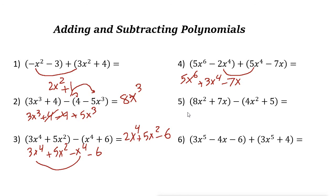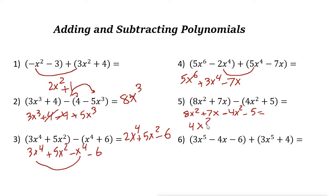For the next example, write the first polynomial: 8x squared plus 7x. Then distribute the negative: negative times 4x squared is negative 4x squared, and negative times 5 is negative 5. Combining like terms: negative 4 and positive 8 gives 4x squared. We have no other like terms for 7x, so the answer is 4x squared plus 7x minus 5.